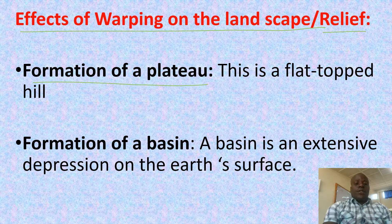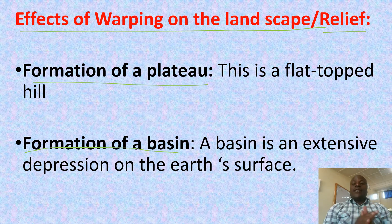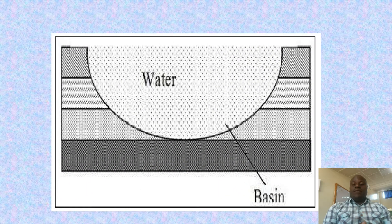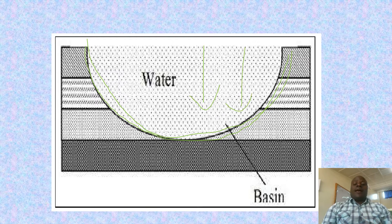Then we have formation of a basin. A basin is an extensive depression on earth's surface — a U-shaped depression on earth's surface. This happens majorly because of down warping. Here is an illustration of a U-shaped depression or a basin. This is a basin formed as a result of down warping. And when it is filled with water, it forms a basin lake.